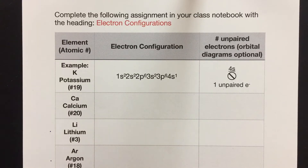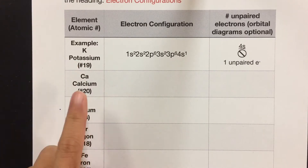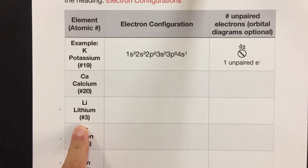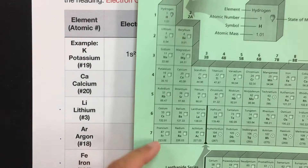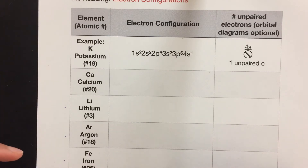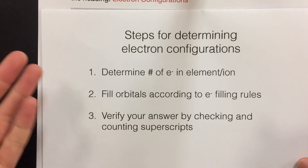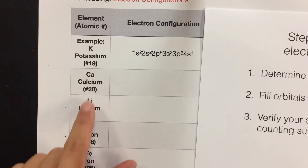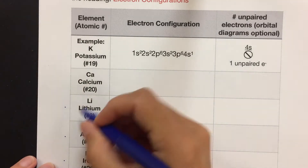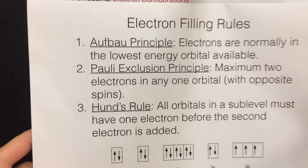We're going to do a couple questions from this and we're going to follow these steps. We're going to start with lithium — it's a nice easy one. It gives you the name of the element, the symbol, and the atomic number in case you're having a hard time finding it on the periodic table. Since these are all neutral elements, the number of electrons will be the same as the atomic number or the number of protons. So for lithium we have three electrons to place, and we're going to follow our rules and fill from the lowest energy level first.